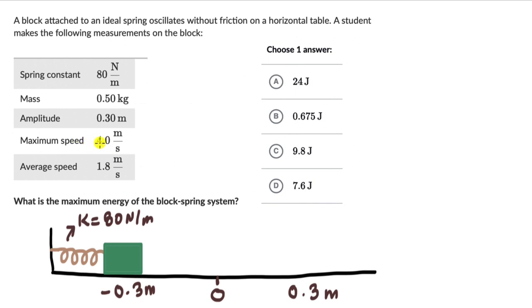So maximum speed really is achieved when the block crosses the equilibrium position when there is no net force acting on the block. The block moves with a maximum speed when it crosses the zero position, the origin over here, the equilibrium position.